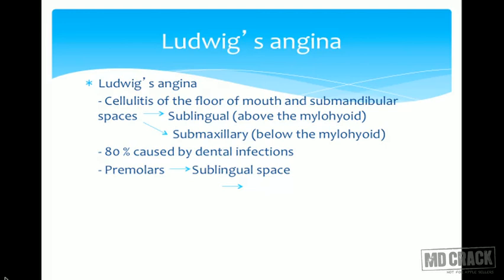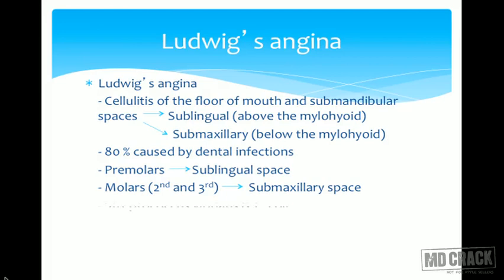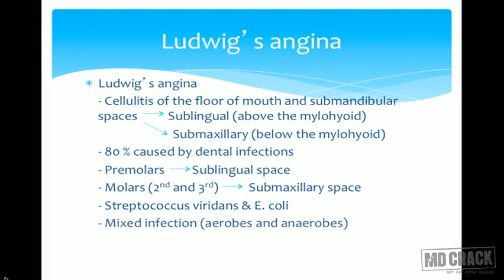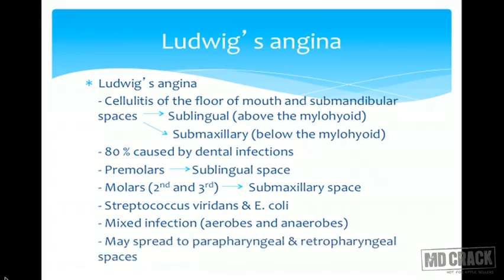If the tooth involved is a premolar, the sublingual space is involved, while if a molar is involved, it spreads to the submaxillary space — mostly second and third molars. Streptococcus viridans and E. coli are the most common organisms isolated, and sometimes mixed infection with aerobes and anaerobes is seen.